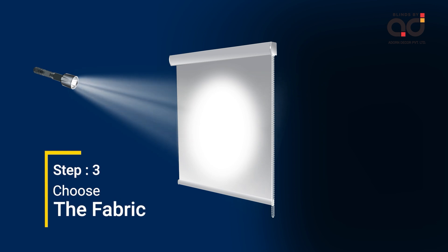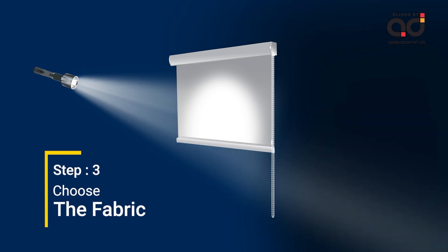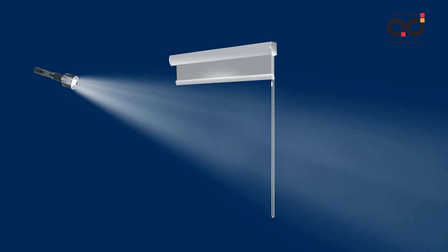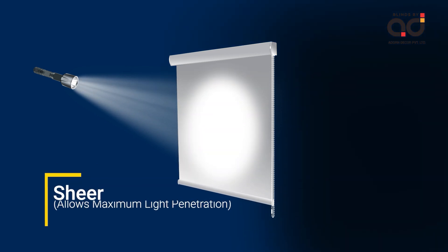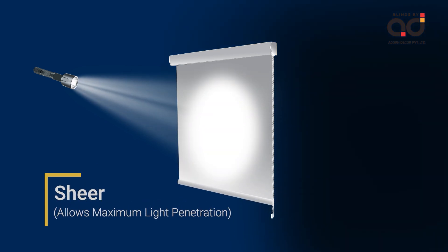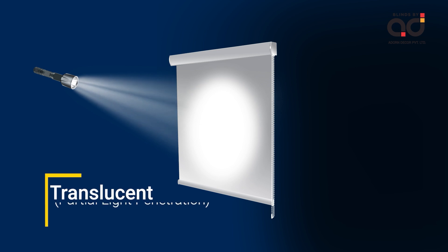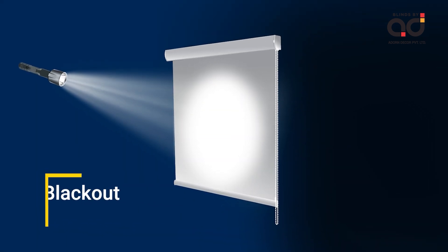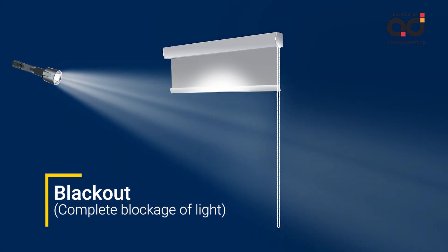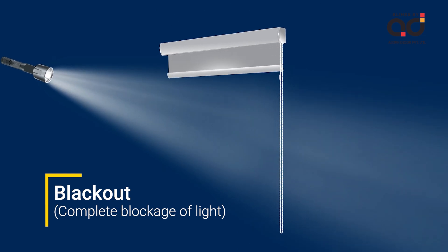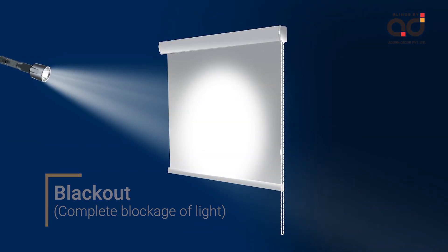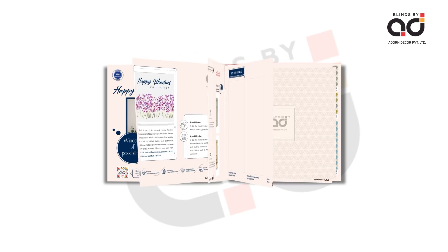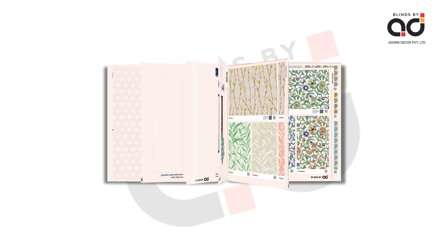Step 3 is choosing the fabric. Considering the room and light filtration requirements, choose from sheer, translucent, and blackout fabric samples as shown in the Adorn Happy Windows catalogues. The final step is choosing your print.